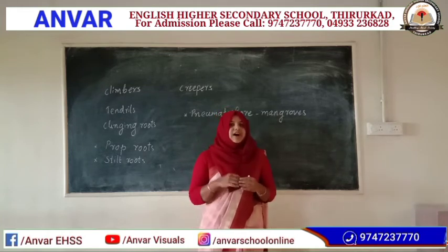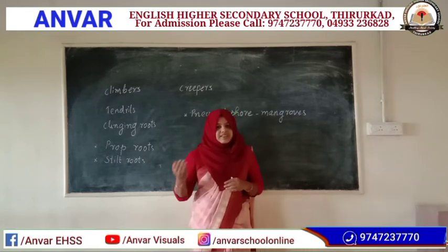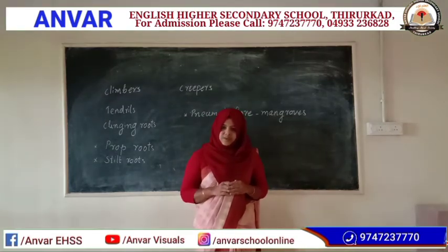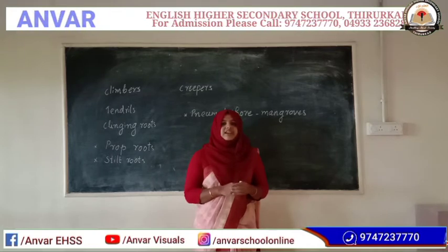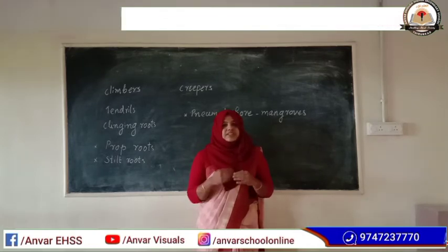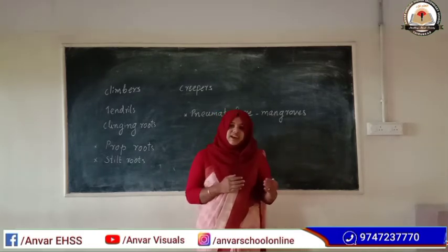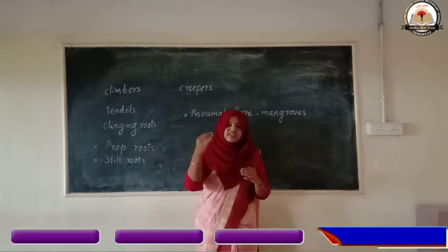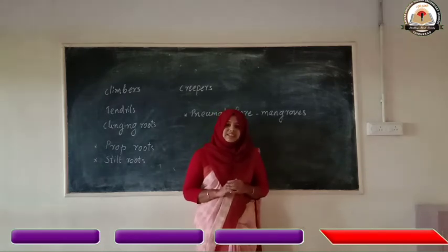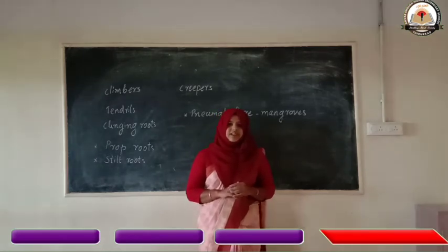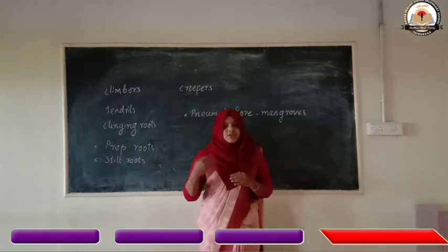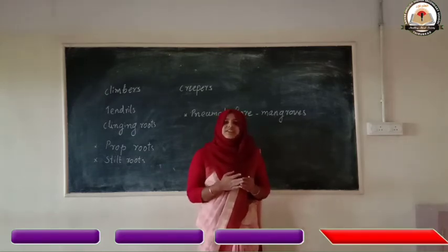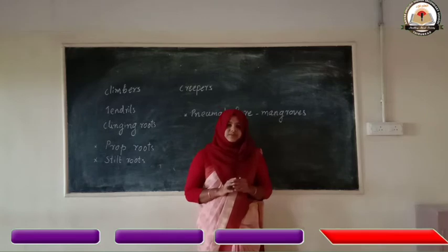Some plants are storing their food in roots — such roots are called storage roots. And some other plants store their food in stems. Such stems that can be seen below the soil are called underground stems. Example for storage root is tapioca, and potato is an example for underground stem.